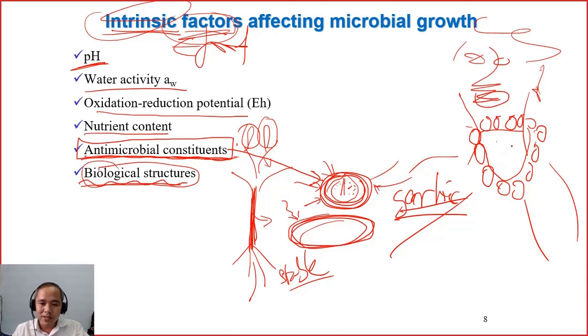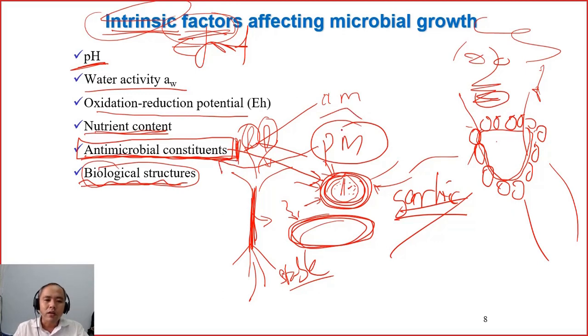It happened in the past. Right, we go back here, nutrient content. I'll just give you another example here. If we look at antimicrobial constituents, then normally animal material and plant material, plant material normally have more antimicrobial constituents compared to animal material.